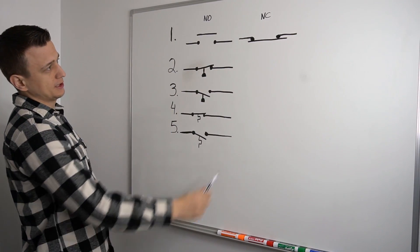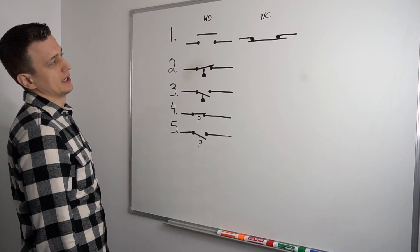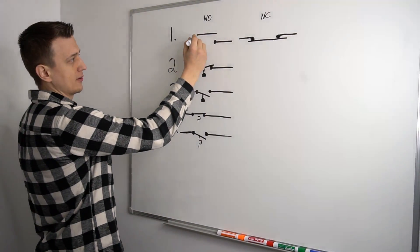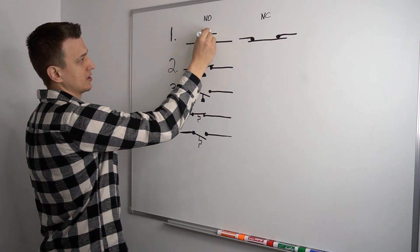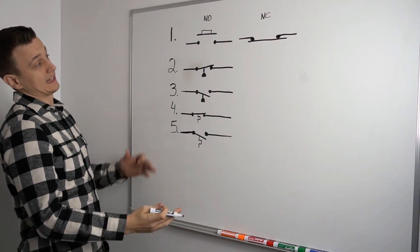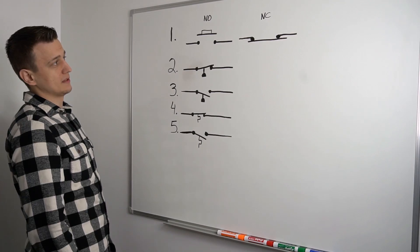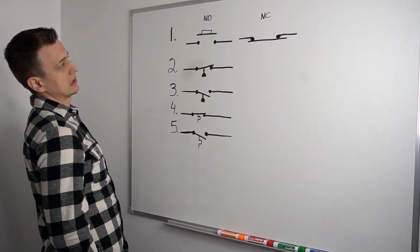Either way, this will be the symbol for a push button switch. This is a normally open switch. This is a normally closed switch. And sometimes they'll be drawn with an actual button on top of them. Typically, they will look like that.